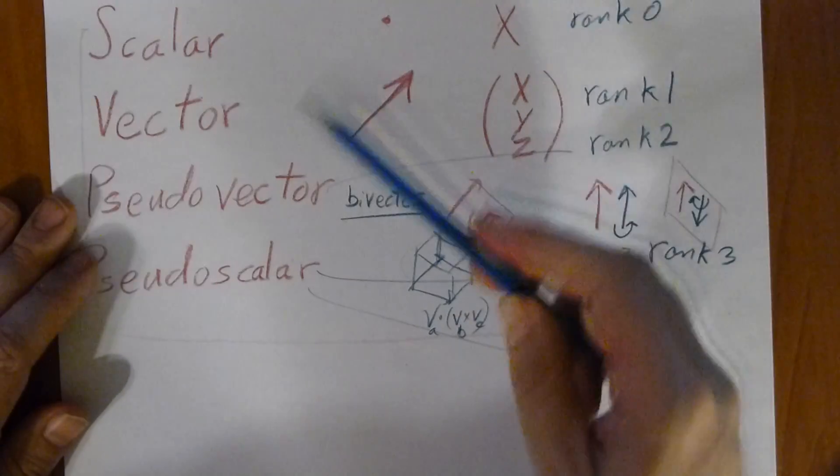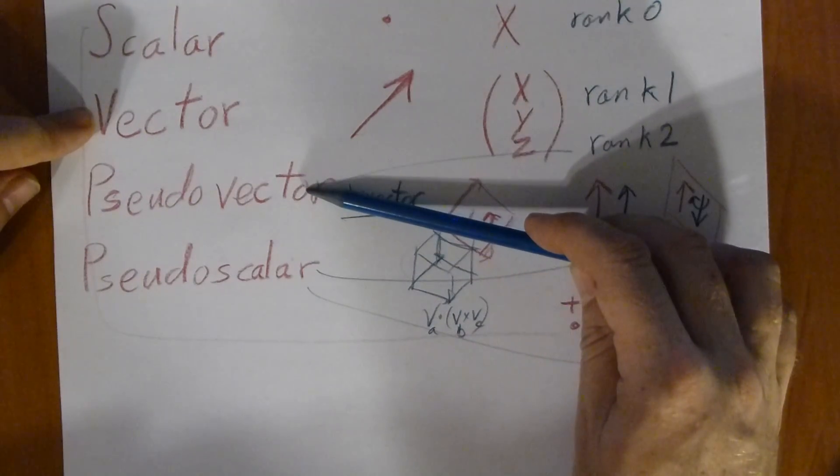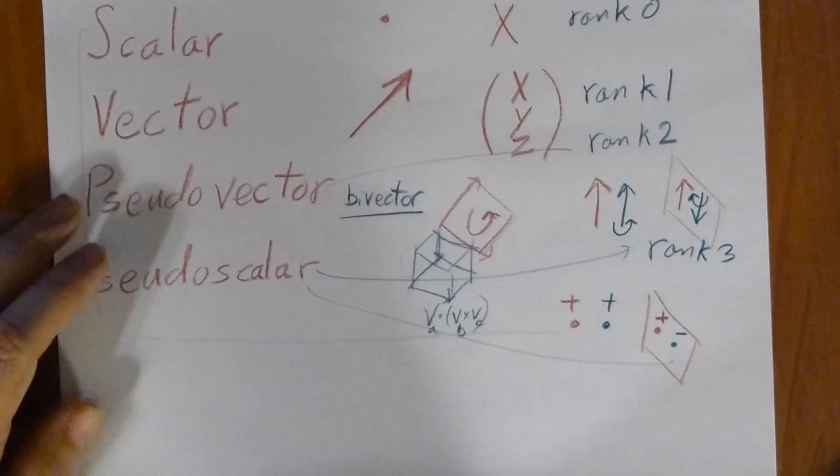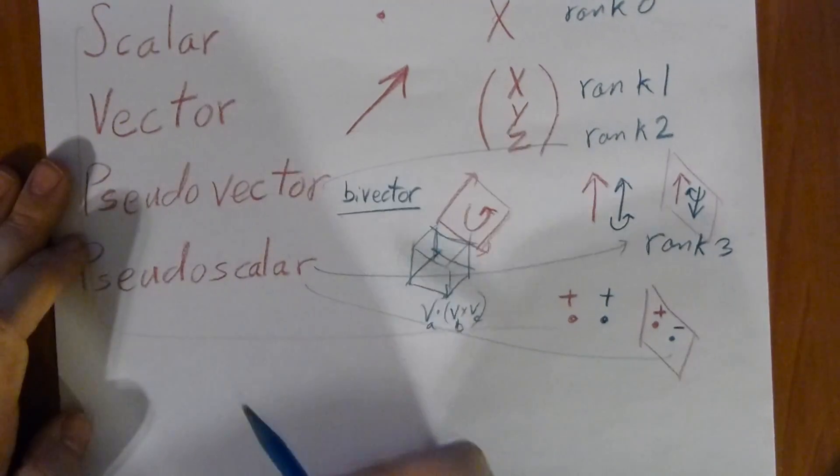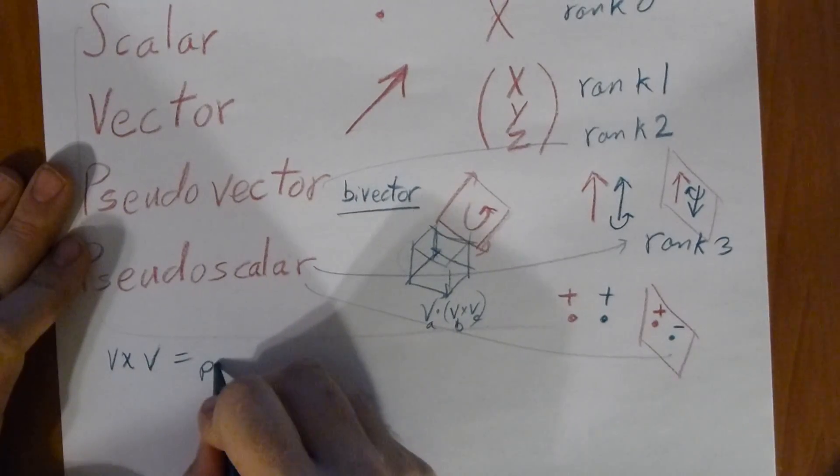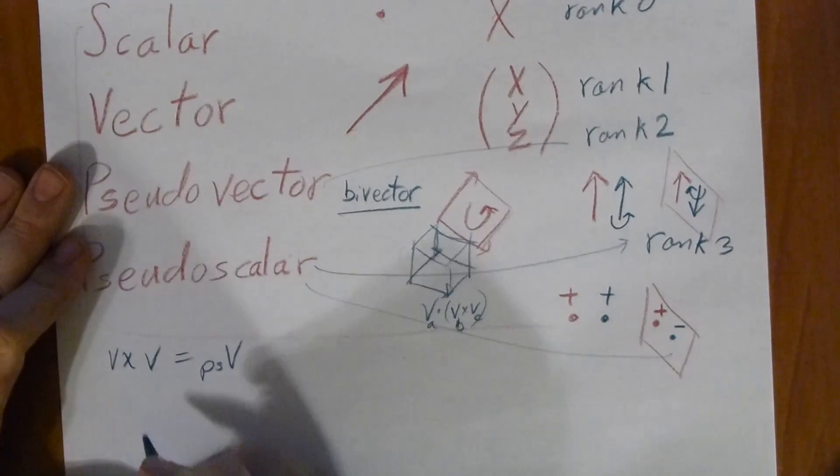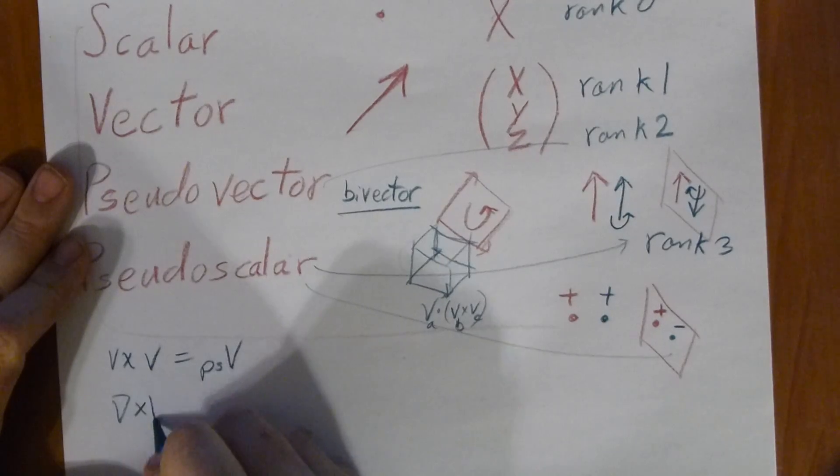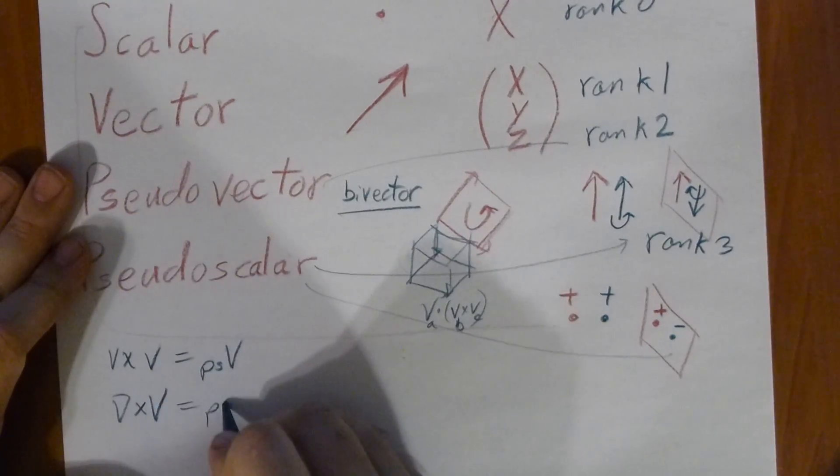I mentioned we can't add vectors and pseudovectors. You can't add scalars and pseudoscalars. In terms of vectors, a vector cross vector is a pseudovector. The curl of a vector is a pseudovector.